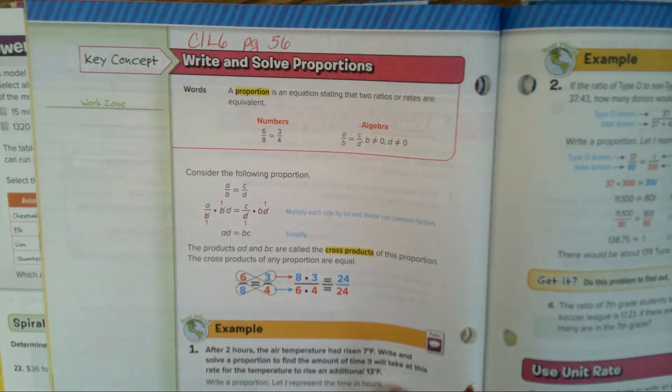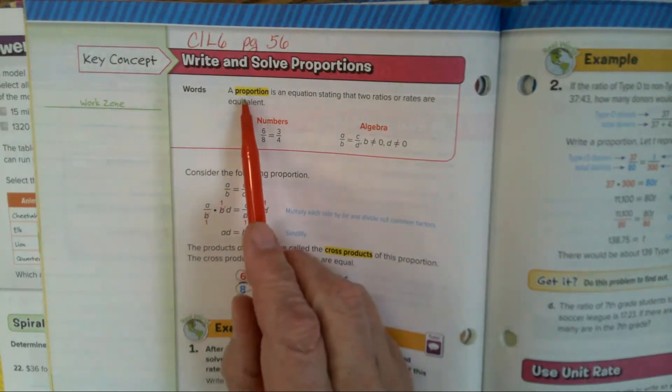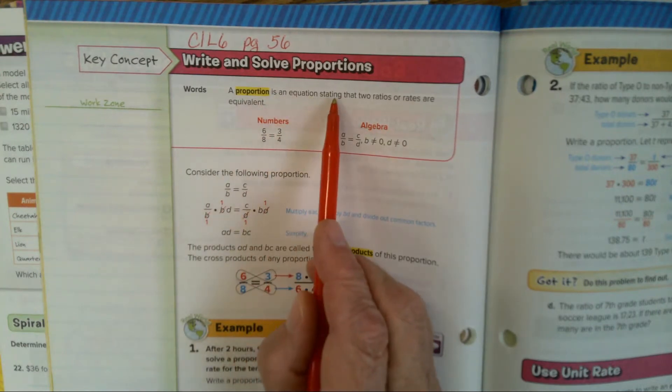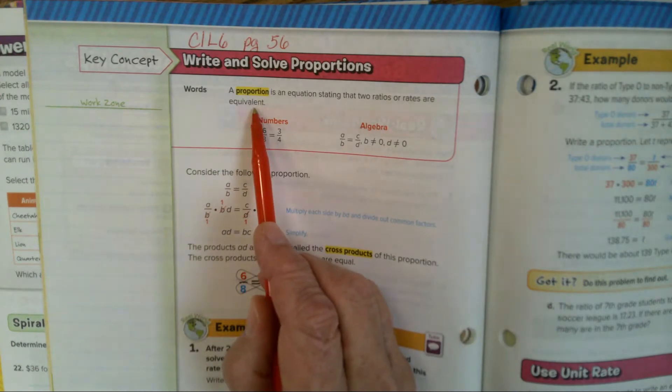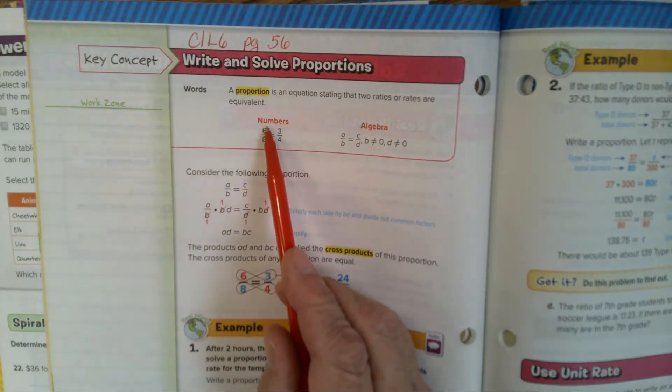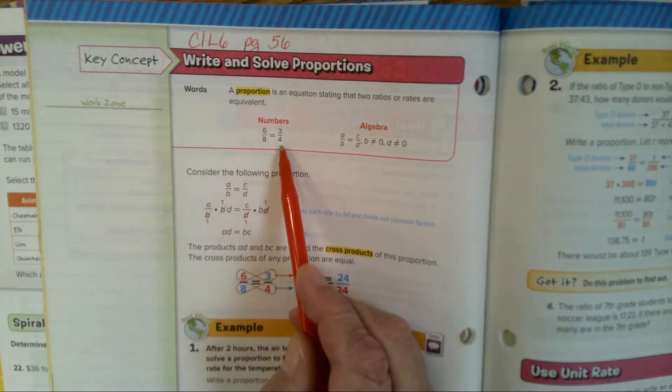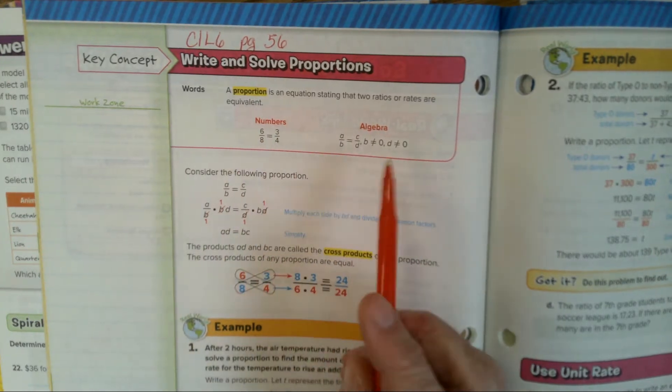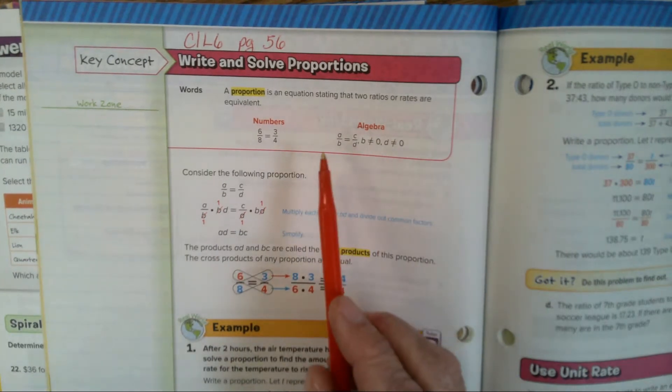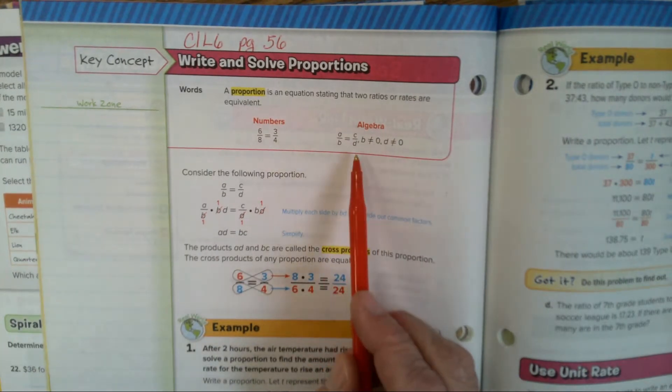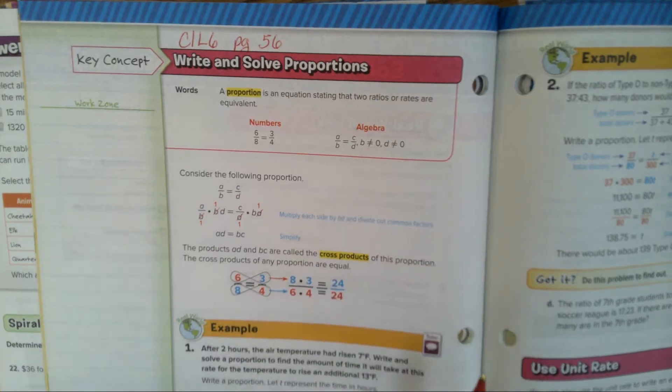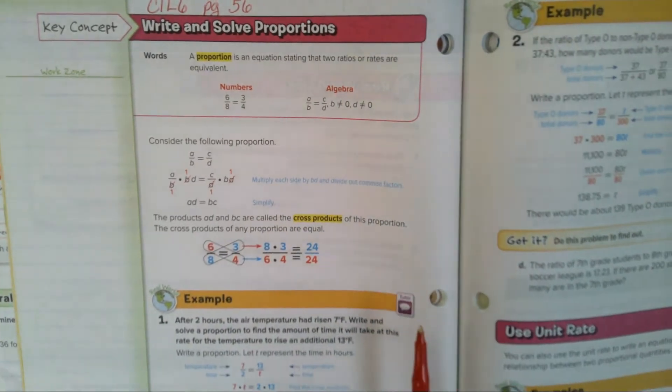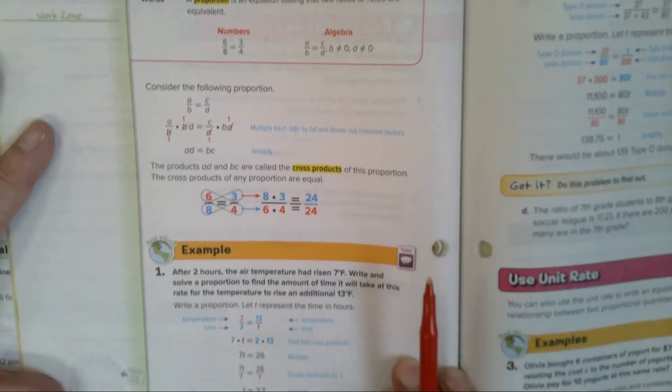We watched it in class, so if you're not here today, go to your e-book and you have access to the BrainPop video. Now it says Write and Solve Proportions. Let's look at what this looks like in algebra. A proportion is an equation stating that two ratios or rates are equivalent. That means they're the same thing. Numbers: 6 over 8 equals 3 over 4. They simplify each other. In algebra, we would say A over B equals C over D, where B and D cannot be 0.